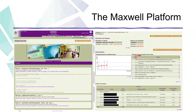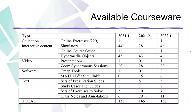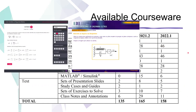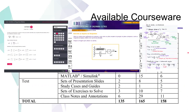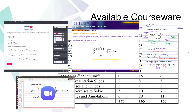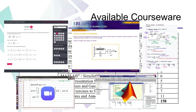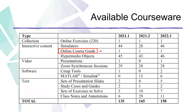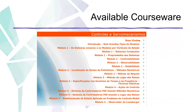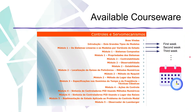Using Maxwell, the professor can easily get statistics on the students' access to all available resources. For each semester, a wide selection of courseware was made available to the students, including online exercises, interactive simulators, class annotations, recordings of the Zoom sessions, and software for MATLAB. One of these resources is particularly important: the course guide, which outlines all the topics that will be addressed during the school term. Since students are required to study the material before classes, they are assigned each week a topic from the course guide to study.